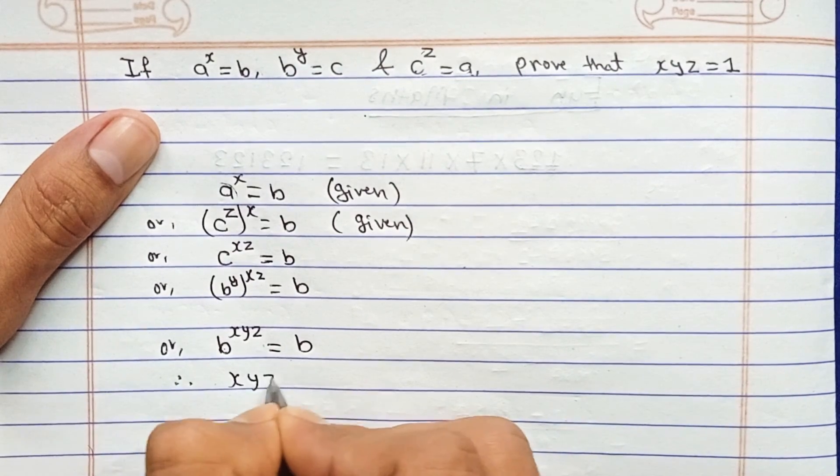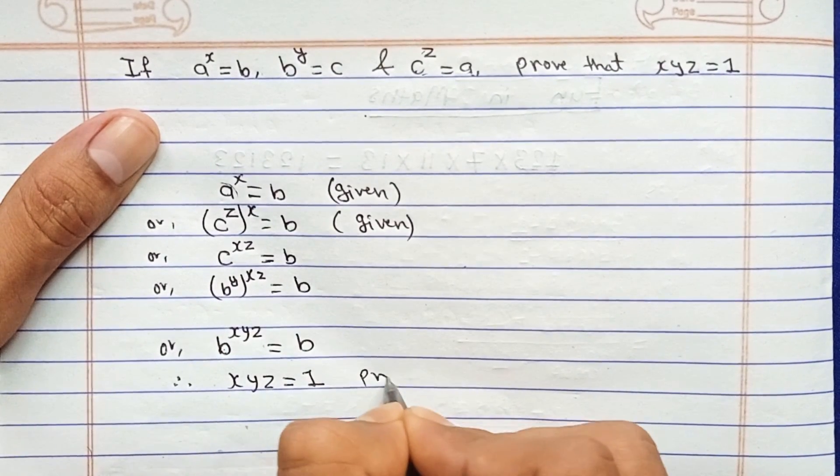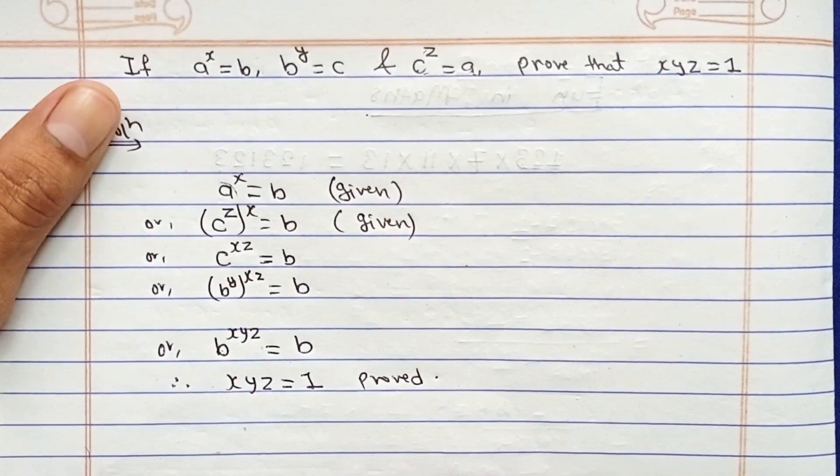Therefore b and b get cancelled, xyz equals to 1. Proved. Is it difficult?